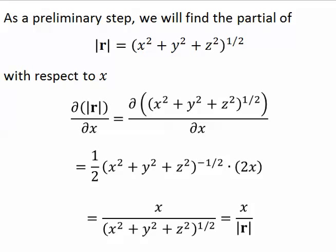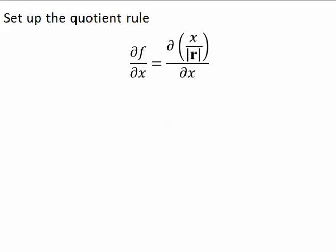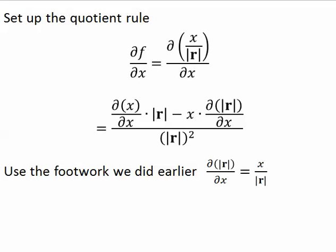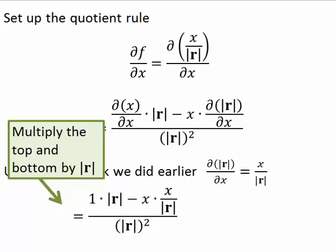Now we're ready to find the partial of the first component with respect to x. Well, it's a quotient, so we have to set up the quotient rule. After we set up the quotient rule, we use this footwork that we did earlier. So, the partial of x with respect to x is just 1, and then the partial of the magnitude of r with respect to x, that's equal to x over the magnitude of r. Now, multiply the top and the bottom by the magnitude of r, and we get this.